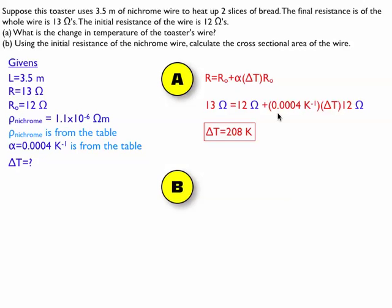For part B, I'm going to be using R is equal to resistivity times the length divided by the area. That's the only formula I have that talks about the cross-sectional area of the wire in it.